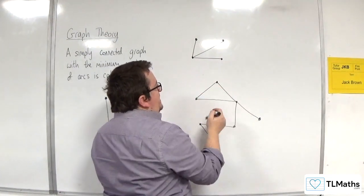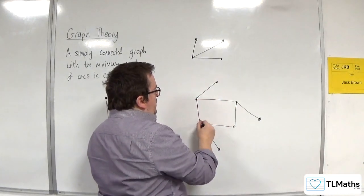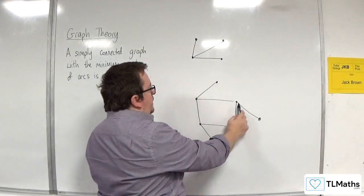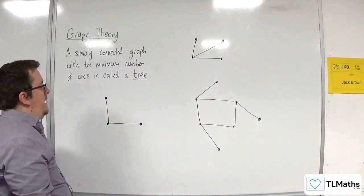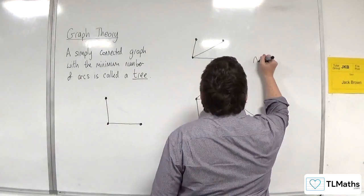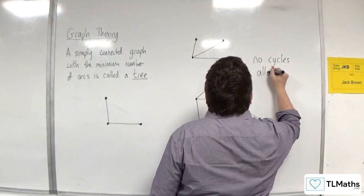Now, it doesn't need to be in a triangle like that. We could have it, if I join those two together, I have now created a cycle here. So a tree must not have a cycle. So no cycles allowed, essentially.